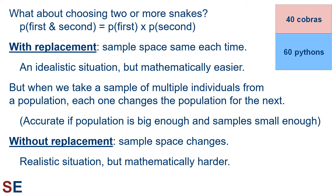A more realistic situation is when we take a sample of multiple individuals from a population all at once. But when we do this, each one we take changes the population from which we are taking the next individual, because the population would be missing the previous individual. Luckily, calculating probabilities as if we are doing sampling with replacement is accurate if the population is big enough and our samples are small enough. However, when we want to make sure we're taking into account the sample space changing, then we're doing what is called sampling without replacement. This is a more realistic situation, but it is mathematically harder. We'll do some example calculations both ways so we can see the difference.